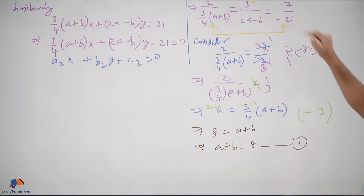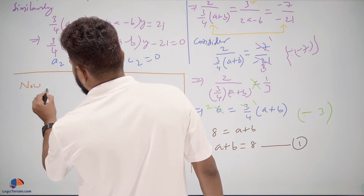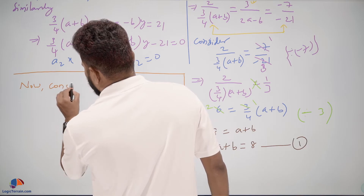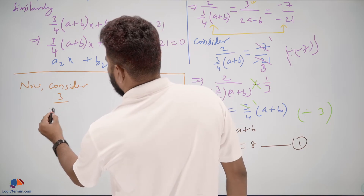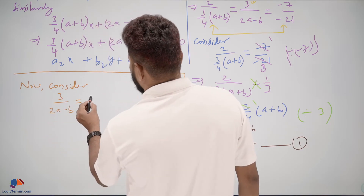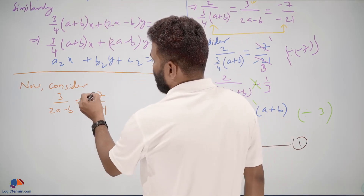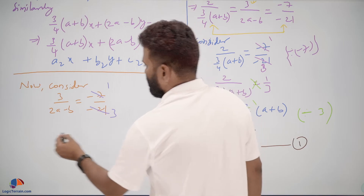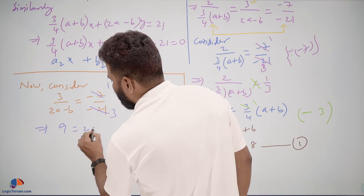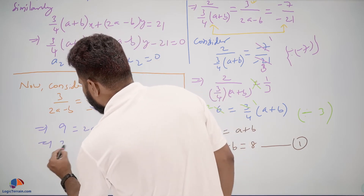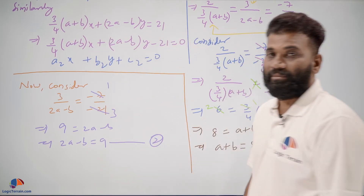Now consider 3 upon (2A minus B) equals negative 7 upon negative 21, which simplifies to 1 upon 3. Cross multiplying gives 3 times 3 equals 9, so 2A minus B equals 9. This is equation number 2.